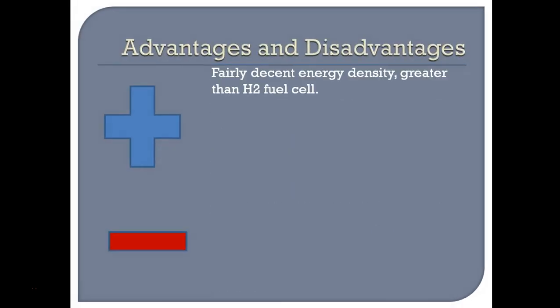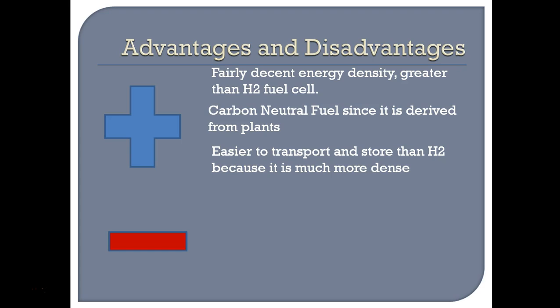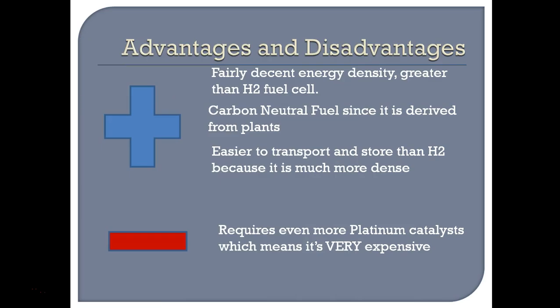Advantages and disadvantages of the methanol fuel cell: you have fairly decent energy density — much greater than the hydrogen fuel cell because the fuels are liquid. It's carbon neutral: even though carbon dioxide is produced, the fuel is derived from plants. It's easier to store and transport because it's much more dense than hydrogen. Disadvantages: it requires even more platinum to operate, so it's very expensive. Additionally, the fuel is much more expensive to produce because you have to grow and cultivate plants, ferment them to produce the alcohol.